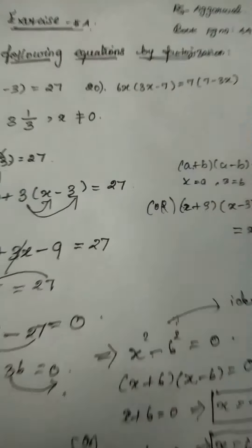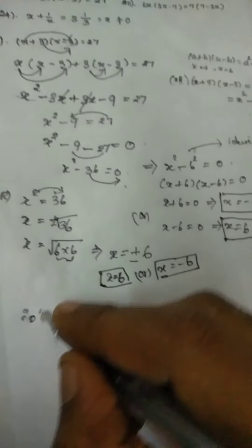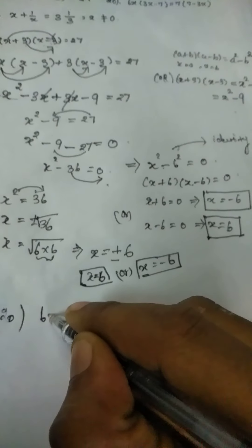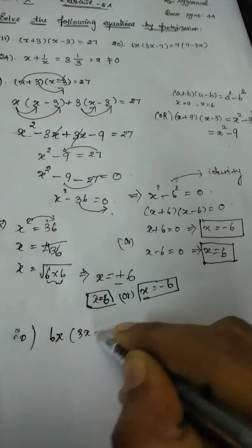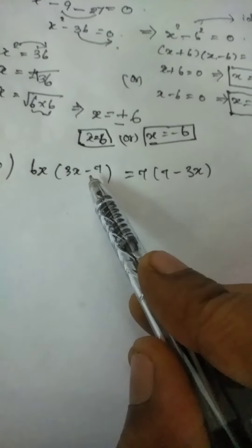And next I am going to solve your 20th problem. 20th problem it is nothing but 6x into 3x minus 7. So next 20th question 6x into 3x minus 7 is equal to 7 into 7 minus 3x.